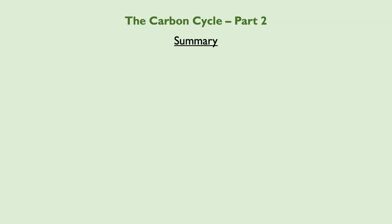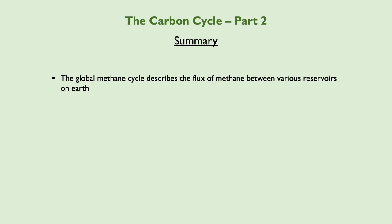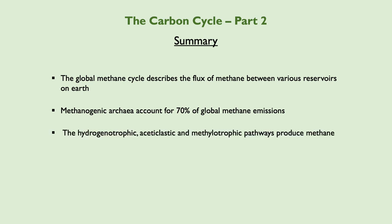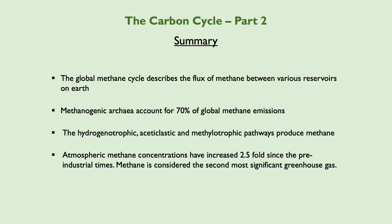In summary: the global methane cycle describes the flux of methane between various reservoirs on Earth. Methanogenic archaea, also known as methanogens, account for 70% of global methane emissions. The hydrogenotrophic, acetoclastic, and methylotrophic pathways are the biochemical pathways used to produce methane. Atmospheric methane concentrations have increased two and a half fold since pre-industrial times, and methane is considered the second most significant anthropogenic greenhouse gas.